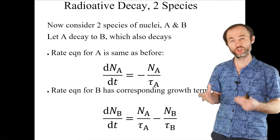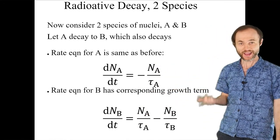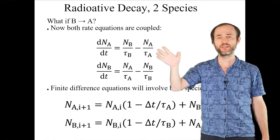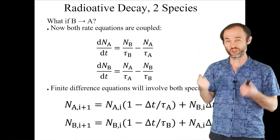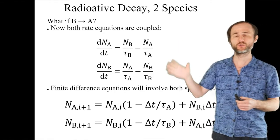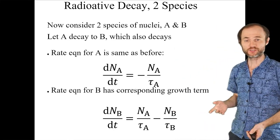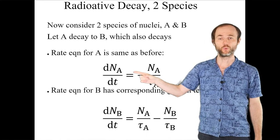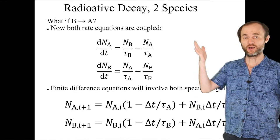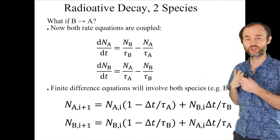Let's make it more exciting: suppose species B decays back into A. Now we have a cycle — A decays into B and B decays into A, each with its own lifetime. Both equations are coupled; you cannot solve one without solving the other. Previously you could solve A first and plug in, but now we must discretize both equations simultaneously.